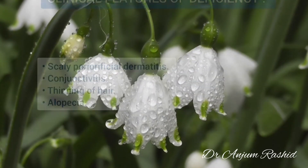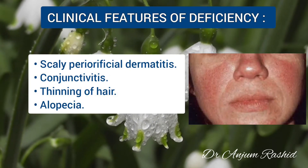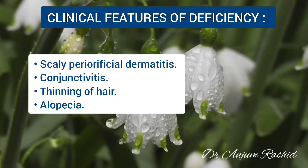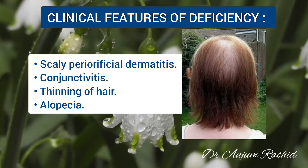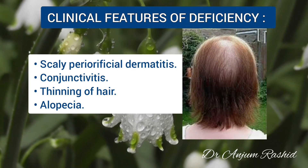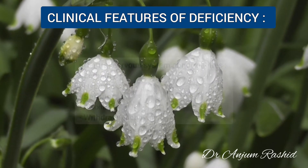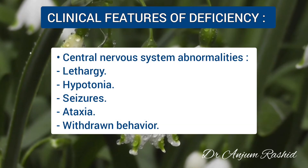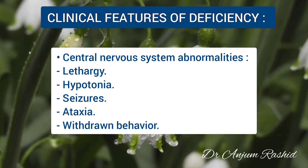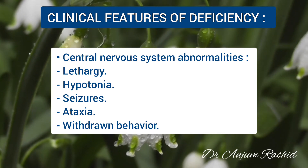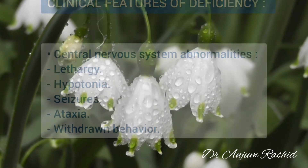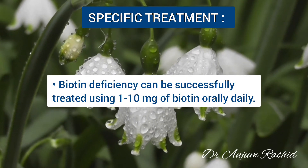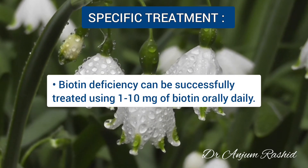Clinical features of biotin deficiency include scaly periorifacial dermatitis, conjunctivitis, thinning of the hair or alopecia. CNS abnormalities include lethargy, hypotonia, seizures, ataxia, and withdrawal behavior. Treatment is with daily oral biotin in a dose of 1 to 10 milligrams.